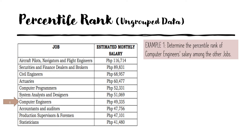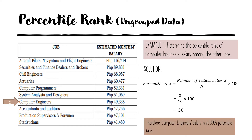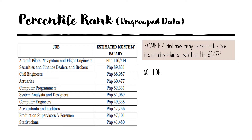To solve for the percentile rank of the salary, we use the formula: percentile of x equals number of values below x over n times 100. In this case, we have three values below the computer engineer salary, and the total number of data is 10. So we have 3 over 10 times 100, which simplifies to 30. Therefore, the computer engineer salary is at the 30th percentile rank.